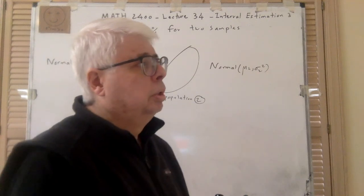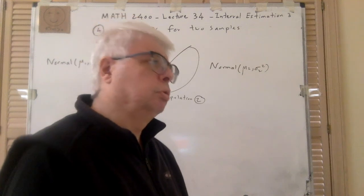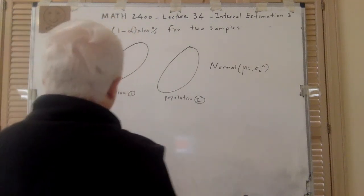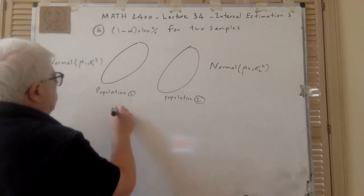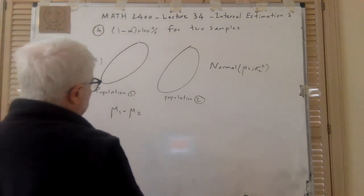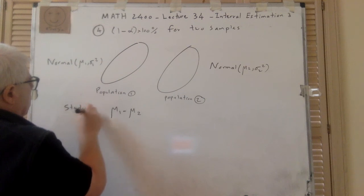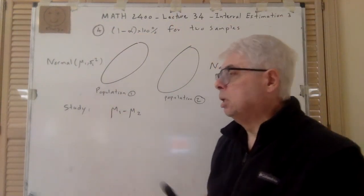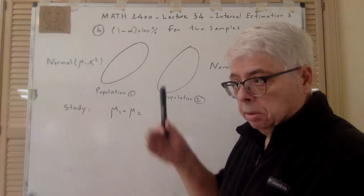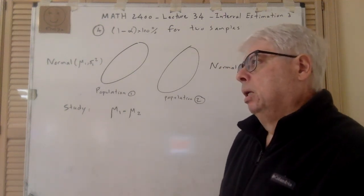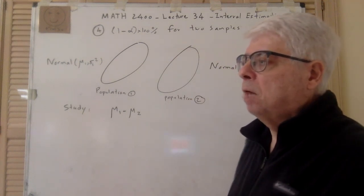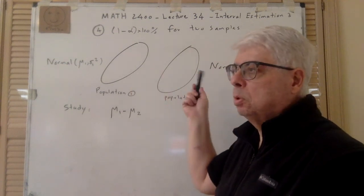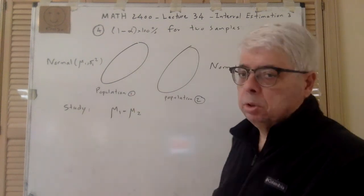And then you're comparing something like the price. You might want to study the difference between prices — something like that. So we want to do some study on μ1 minus μ2. This company is selling for a certain price and this one at another price, but it varies. We want to see what the average price here is and the average price there is. If the difference is positive, this one is cheaper on average; if negative, this one is cheaper. We want to find some interval that this difference falls within.